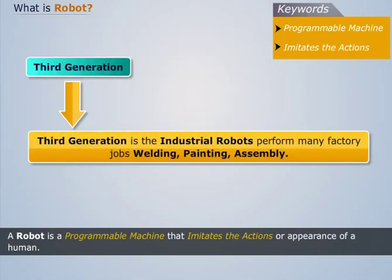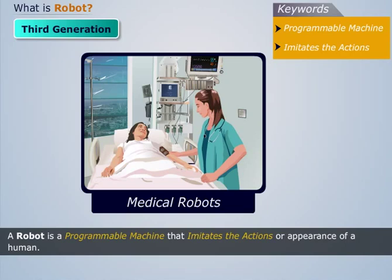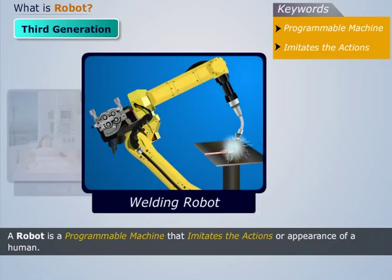Third generation is the industrial robots. They perform many factory jobs like welding, painting, assembly. Medical robots assist with surgery, transport materials, dispense medicine, etc.